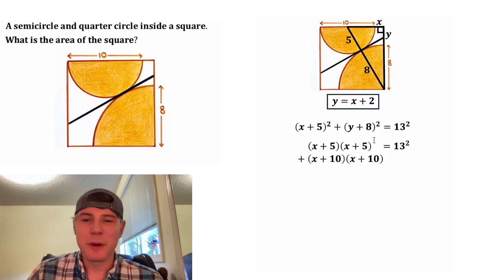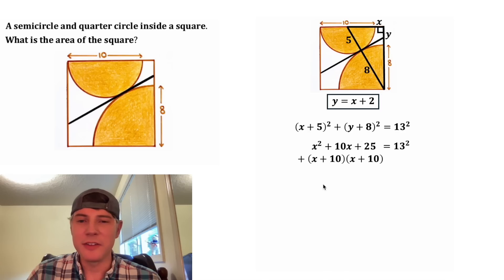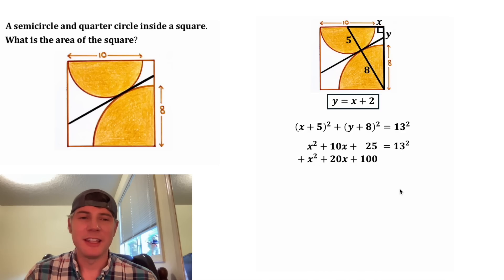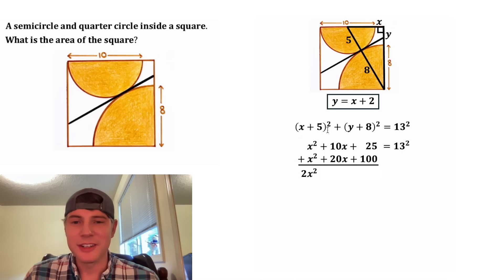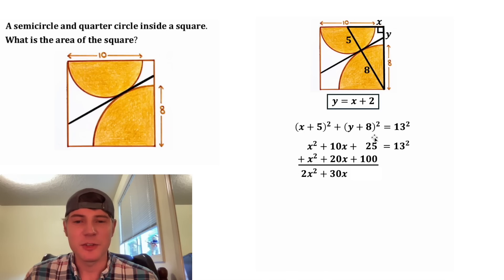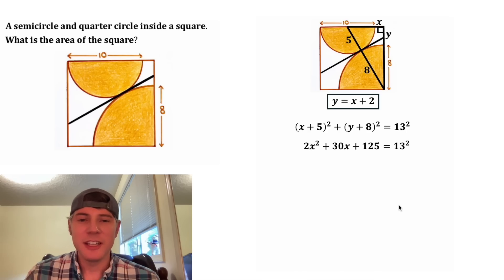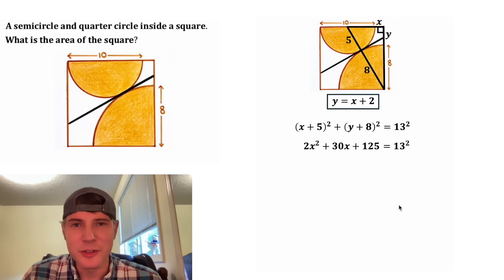After we multiply this out, we get x squared plus 10x plus 25. And after we multiply this out, we get x squared plus 20x plus 100. And then we can add these together. x squared plus x squared is equal to 2x squared. 10x plus 20x is equal to 30x. And 25 plus 100 is 125. And that's all going to equal 13 squared, which is 169.